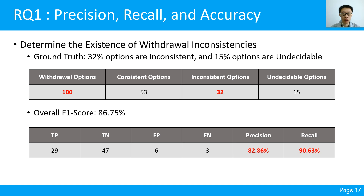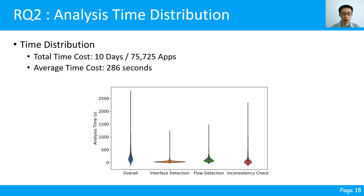Overall, ModeChecker achieves an accuracy of 82.86% and a recall rate of 90.63%. Specifically, ModeChecker identifies 35 withdrawal inconsistencies, and 29 of them are true positives. Regarding runtime performance, the analysis time per application ranges from 17 seconds to 44 minutes, with an average of 286 seconds and a median of 178 seconds. Among the three phases, the privacy data flow detection and inconsistency checking modules cost the most time due to their time-consuming data flow analysis.